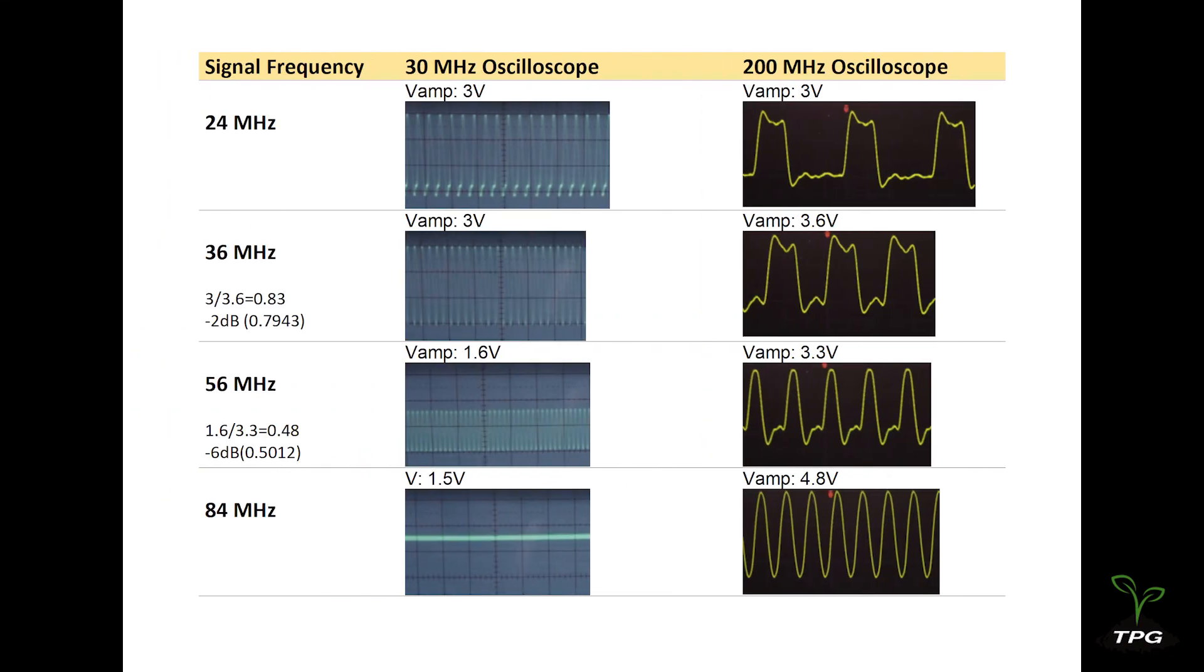When the frequency of the test signal exceeds the bandwidth of the oscilloscope, the base-to-top voltage of the waveform on the oscilloscope decreases. For the 36 MHz signal, the voltage decreases to 83% of the input signal, which corresponds to less than a 3 dB decrease.